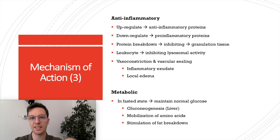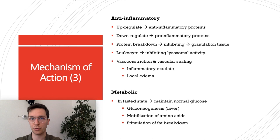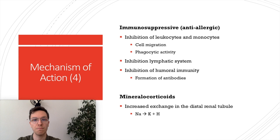Prednisone also has metabolic effects. In a fasted state it helps maintain normal glucose levels by increasing gluconeogenesis in the liver — the production of new glucose. It also leads to the mobilization of amino acids and stimulation of fat breakdown, thereby producing more new glucose.